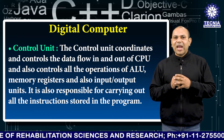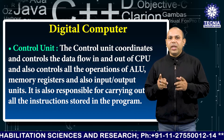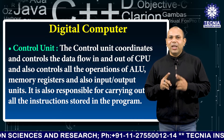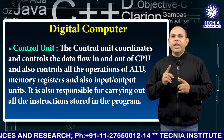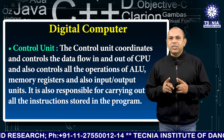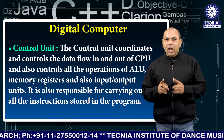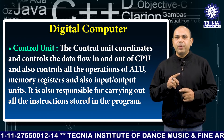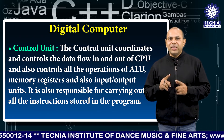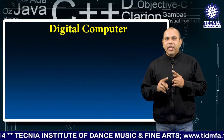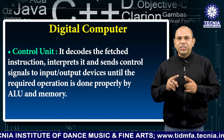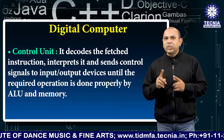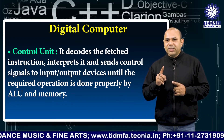The control unit coordinates and controls the data flow in and out of the CPU, and it controls all operations of the ALU, memory registers, and input/output. It is also responsible for carrying out all the instructions stored in the program. It decodes the fetched instructions, interprets them, and sends control signals to input/output devices until the required operation is done properly by the ALU and memory.